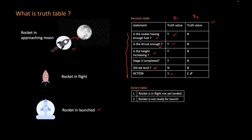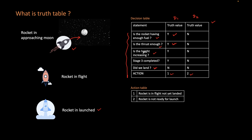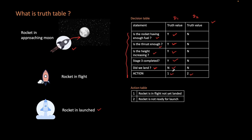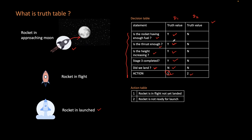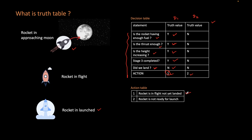These are the actions in this case. For Decision 1: is the rocket having enough fuel? Yes. Is the rocket having enough thrust? Yes. Is the height increasing? Yes. Is stage 3 completed? Yes. Is the rocket landed? No. This means the rocket is on the way — the rocket is in flight, not yet reached the landing surface. That is the conclusion for this decision.